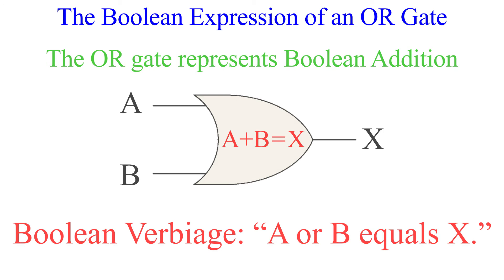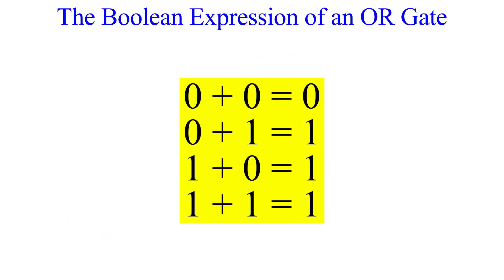Boolean addition follows the same rules as binary addition which we discussed in unit 2. Link is in the description. So here are the four possible combinations of a two-input OR gate given in terms of Boolean addition. 0 or 0 is 0. 0 or 1 is 1. 1 or 0 is 1. And 1 or 1 is 1.